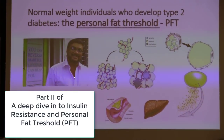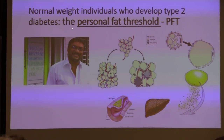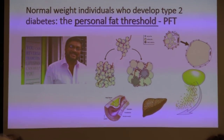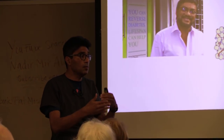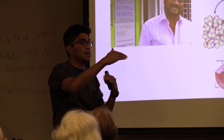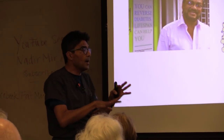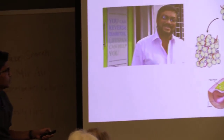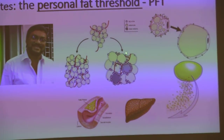This Indian gentleman is doing a lot to reverse diabetes in India and he has a very low personal fat threshold. Indian people become diabetic much before they become heavy, so even though Indians and Chinese people are not heavy, they have surpassed the prevalence of diabetes compared to Americans. Americans are heavier but not as diabetic because their personal fat threshold is higher.